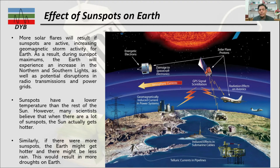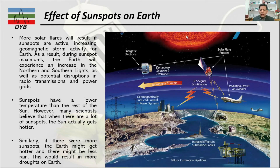Although sunspots have a lower temperature than the rest of the sun, many scientists believe that when there are a lot of sunspots, the sun actually gets hotter overall — meaning the temperature will increase. Similarly, if there are more sunspots, the earth might get hotter and there might be less rain, resulting in more drought on the earth.